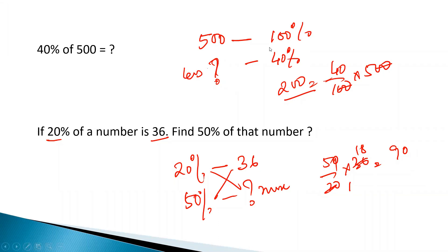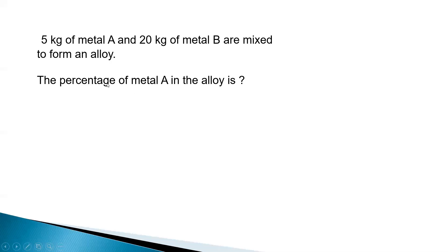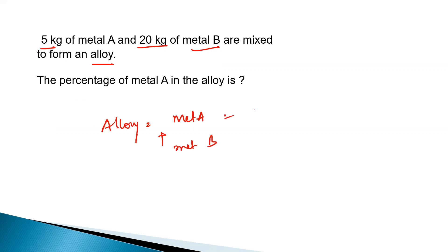The application of chain rule can be brought into any topic when we solve this. Now let us see a few questions on percentage. Here the question says that 5 kg of metal A and 20 kg of metal B are mixed. When two metals are mixed, they form an alloy. So an alloy is the formation of metal A and metal B. The alloy weighs 5 plus 20, which is 25 kg.